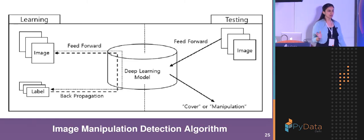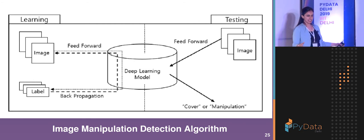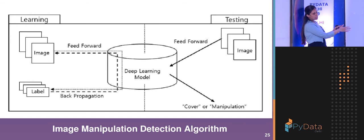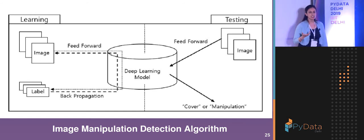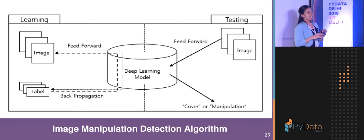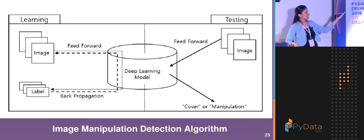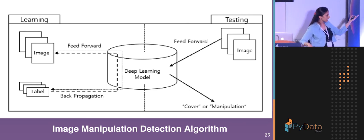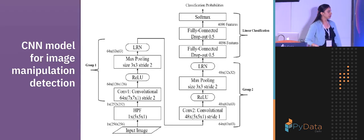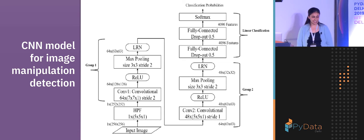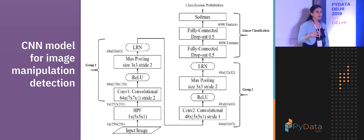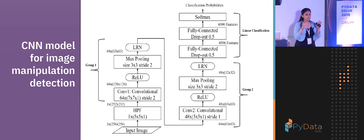For CNN-based detection, we have a set of training images and test images. A deep learning model is fed the training images, weights are initialized and updated via back propagation. Once trained, the model is fed test images and classifies whether the image is original or manipulated. One recent conference paper I studied applies a high-pass filter to the input image before processing, which allows the model to study the hidden portions of the image that are not visible to human eyes.